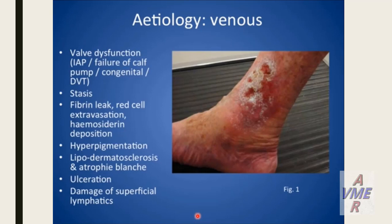First of all, we have to detect what the etiology of the venous ulcers is. It is an increase of ambulatory venous pressure. We have different causes for this increase. First, deep venous system: when you have old deep venous thrombosis and recanalization, after one year it will start what's called post-phlebitic syndrome — fibrosis and stenosis in the deep venous system that increase the intravenous ambulatory pressure.